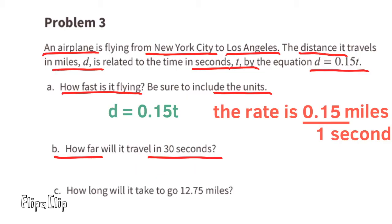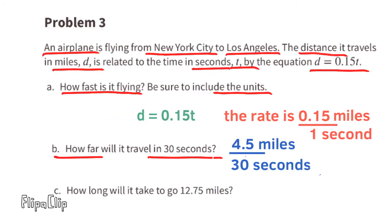Part b — how far will it travel in 30 seconds? Multiply the one second by 30 to get 30 seconds, and also multiply 0.15 by 30, which equals 4.5 miles. At that rate of 0.15 miles per second, the plane would travel 4.5 miles in 30 seconds.